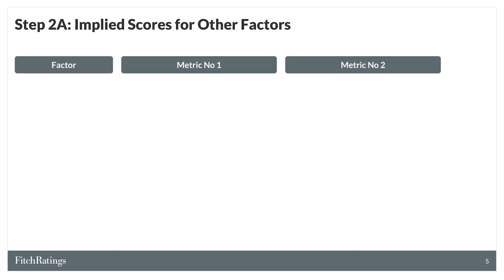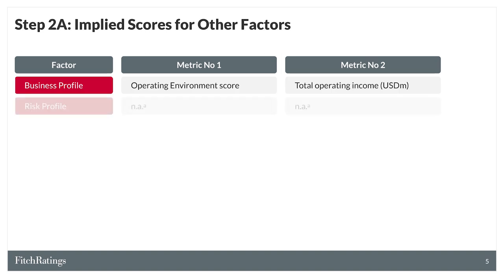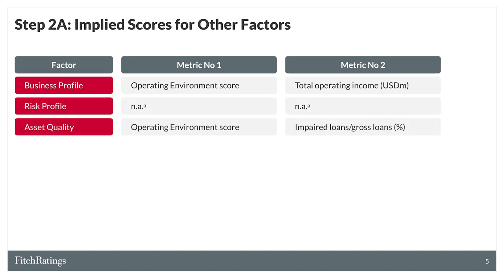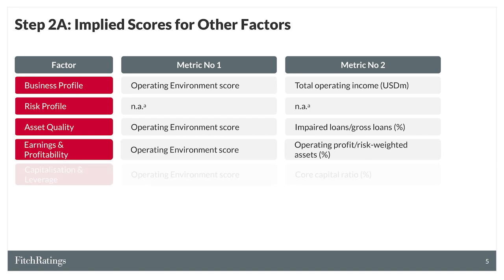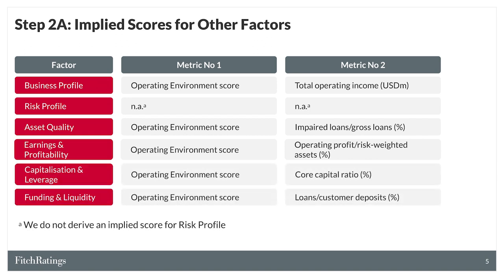The second main step in assigning a bank's VR is to determine the scores for six other rating drivers. Fitch derives implied scores using two-factor matrices for most rating drivers. The operating environment score is one of the two factors. The other factor in each matrix is a core metric most closely related to our assessment of the given driver — for example, the impaired loans ratio for asset quality.